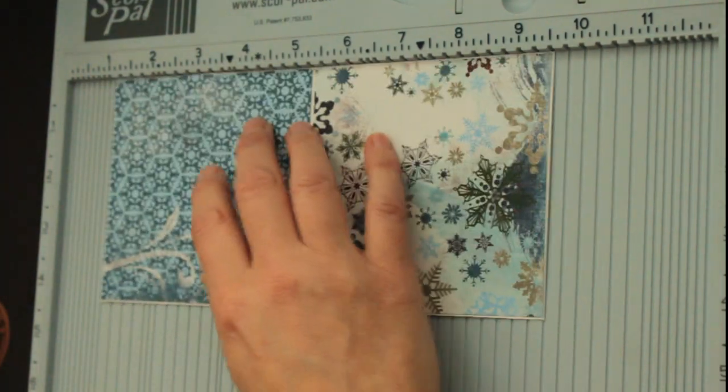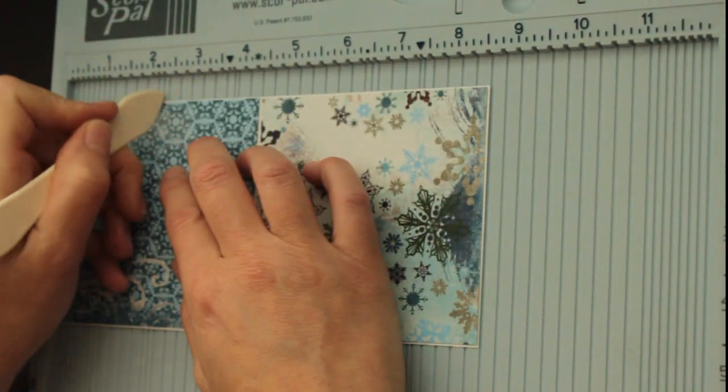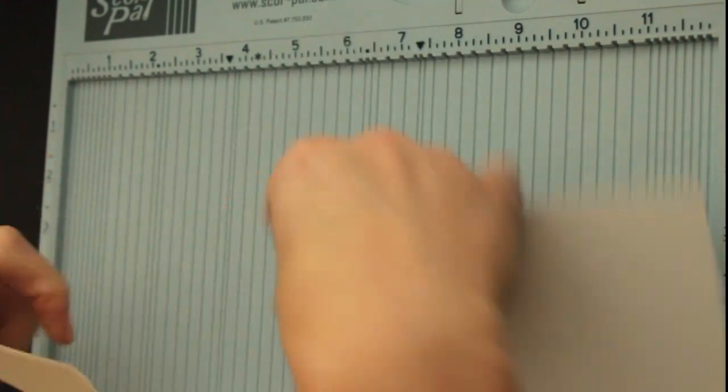That way I'll make sure it will stick. Now I want to just score it again at two and an eighth to make sure it will fold easy. Pre-fold that.